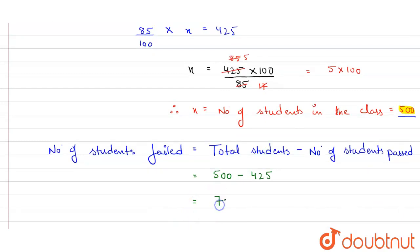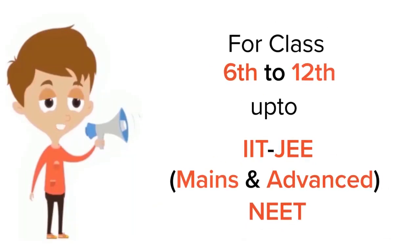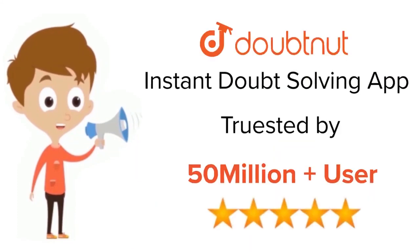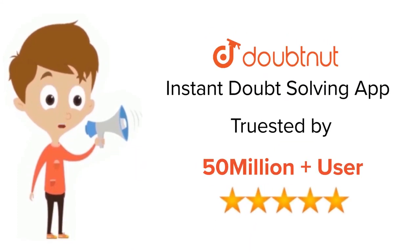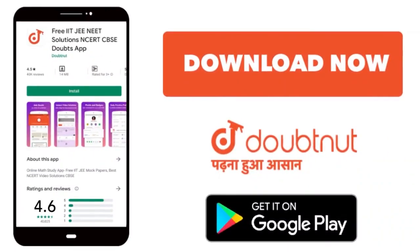500 minus 425 equals 75. So 75 students in the class failed the exam. For class 6 to 12, IIT-JEE and NEET level, trusted by more than 5 crore students — download the DoubtNet app today.